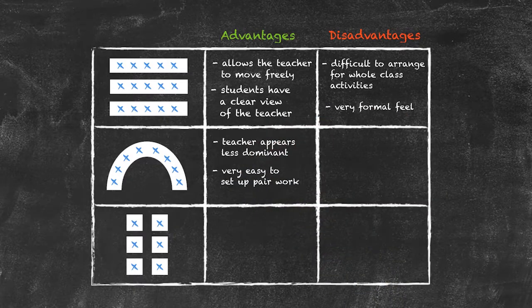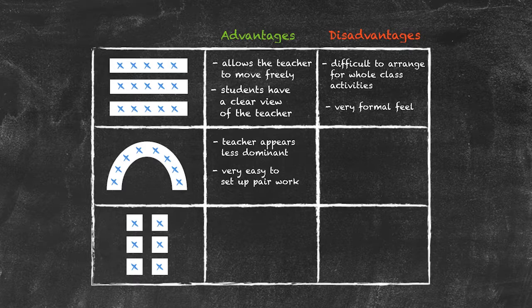There are some potential disadvantages however to this particular arrangement. Perhaps the most important is the actual position of the teacher within the horseshoe. If the teacher moves inside the horseshoe, then some students will actually be behind the teacher and therefore will not be able to see the teacher's mouth when speaking.